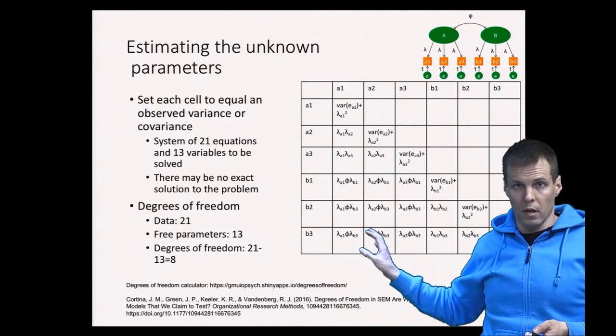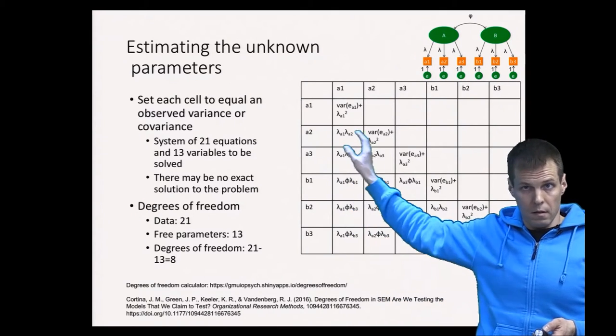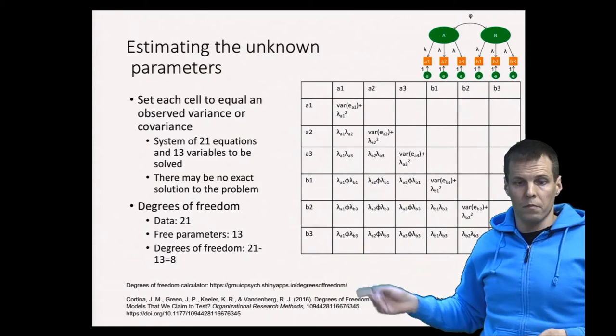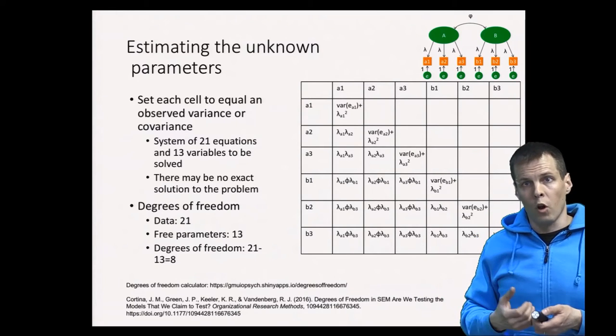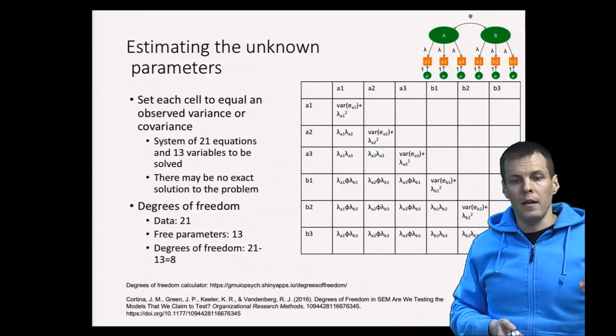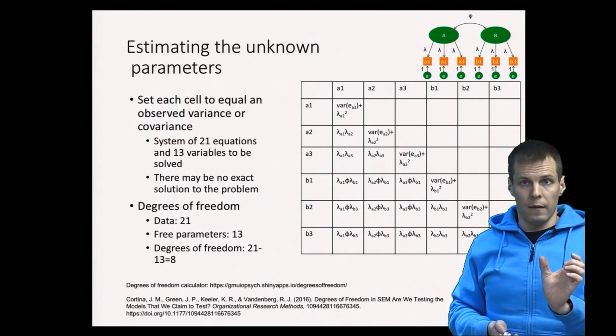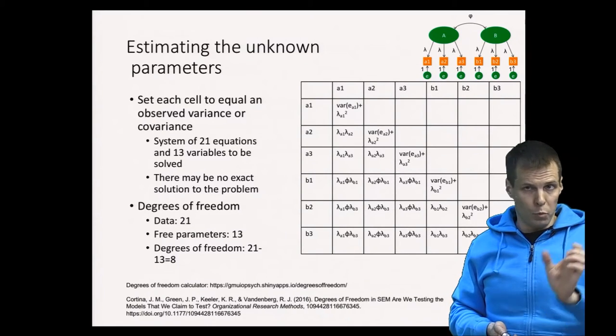We cannot find a set of model-implied correlations such that every correlation would match the observed correlation. We cannot solve it; we have to find a way to quantify the difference between the implied and observed correlations.